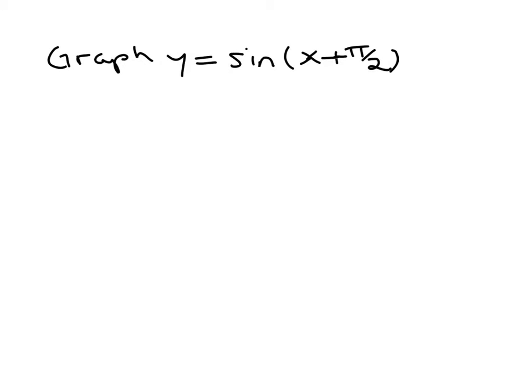Suppose you're asked to graph something like sine of x plus pi over 2. One way to handle that would be to think about your basic shape, the graph of y equals sine of x, and then perform a horizontal shift left pi over 2 units because you've got this plus pi over 2 inside the function.